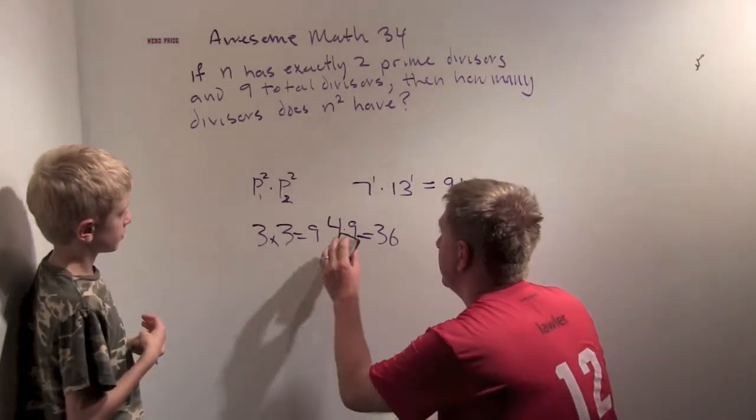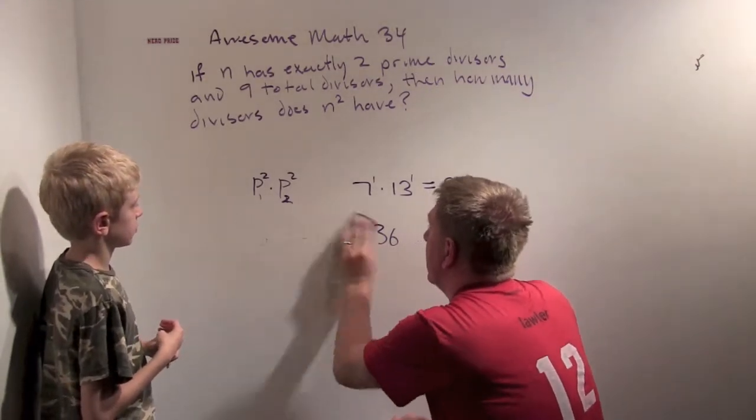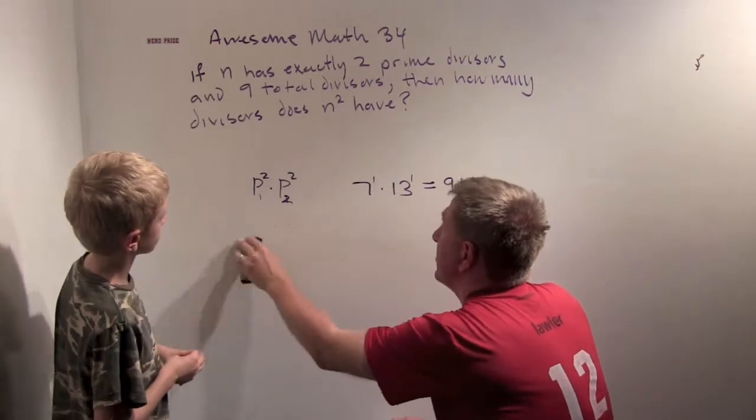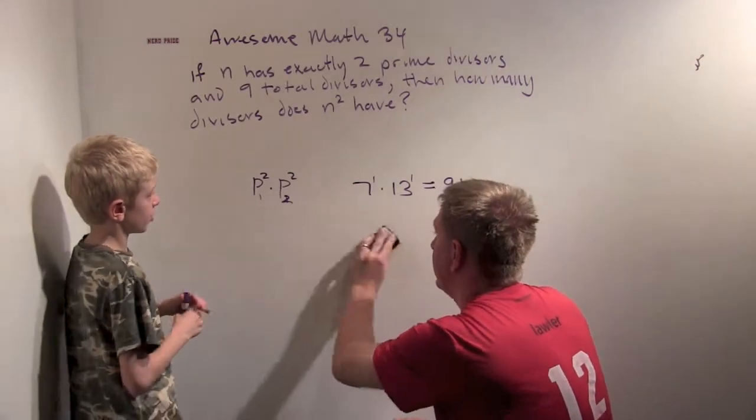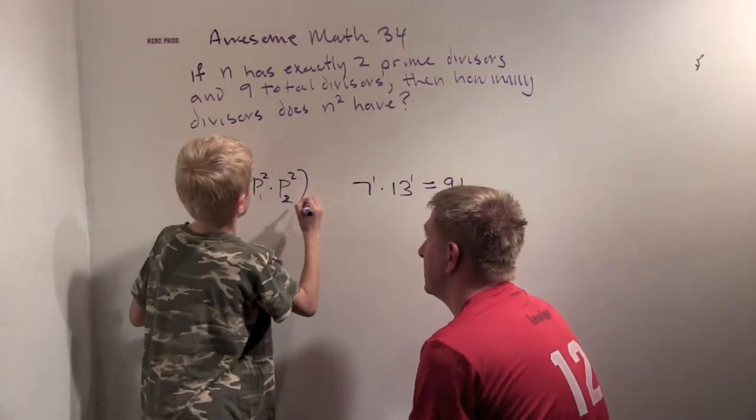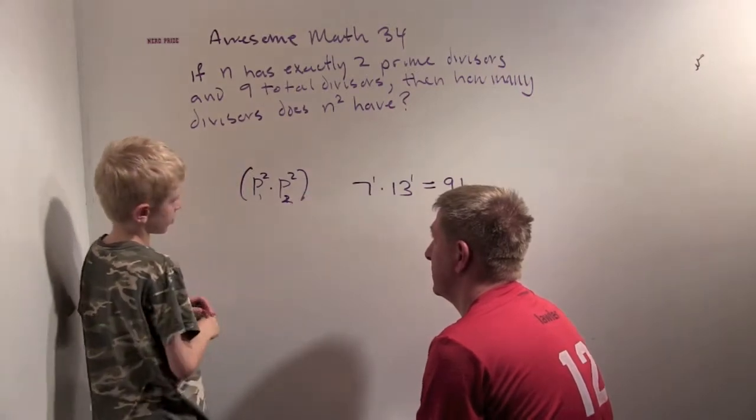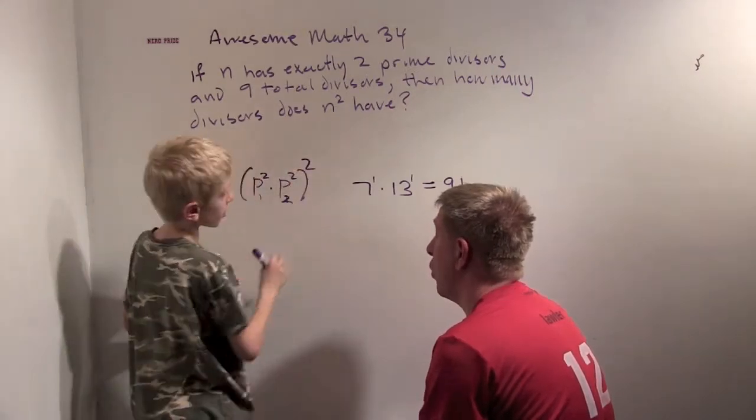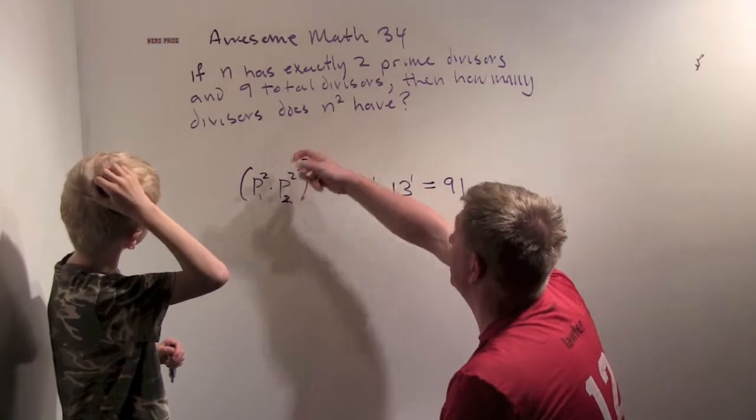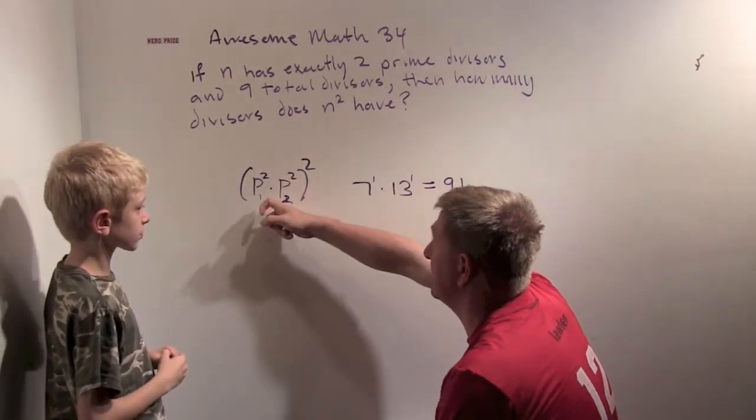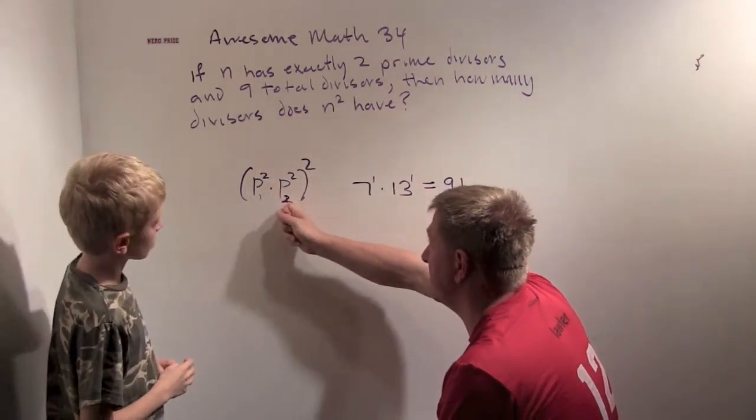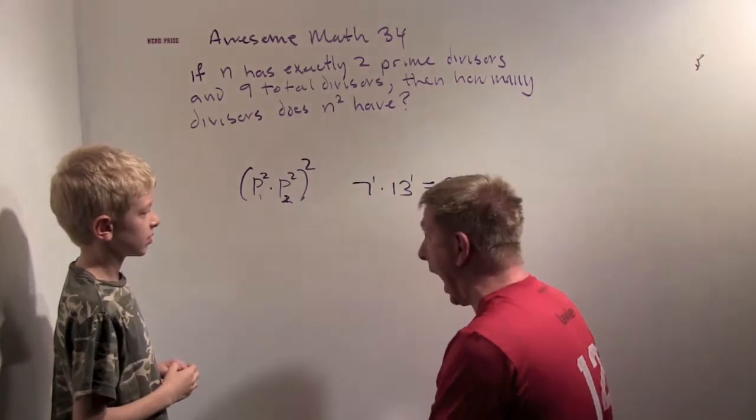And we are trying to figure out how many divisors does this number squared have? So, prime 1 squared times prime 2 squared, squared. Whoa. So here's our number n, and it's a prime squared times a different prime squared, and then we square it.